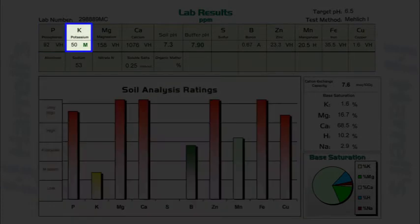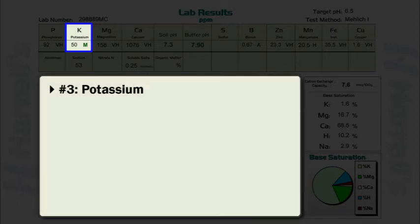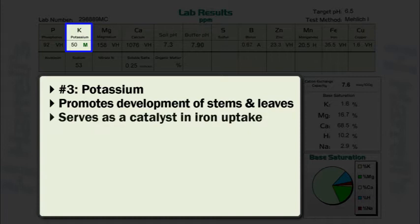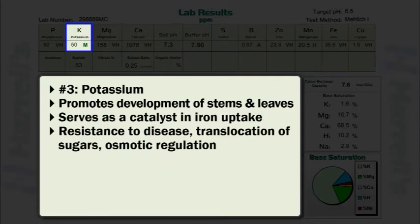Potassium soil test levels should be the next item reviewed on a soil test report. Potassium is important as it promotes development of stems and leaves through carbohydrate formation. In addition, potassium serves as a catalyst in iron uptake, increases resistance to disease, promotes the translocation of sugars, and is very important in osmotic regulation.